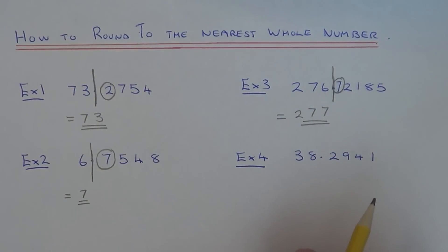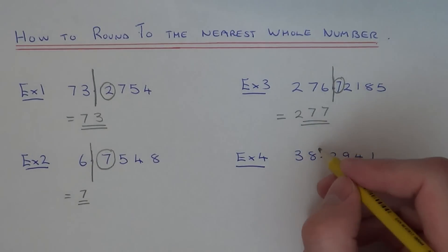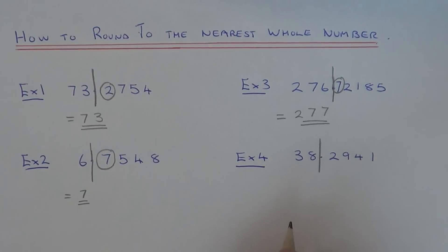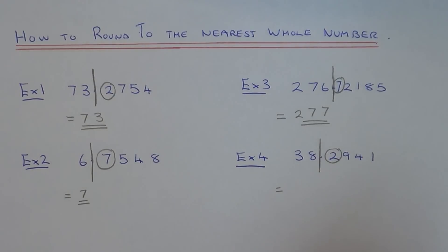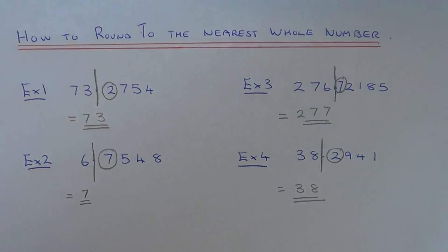So our final example is 38.2941. We need to cut the number off here, so our answer will either be 38 or 39. We just need to look at the number after the decimal point. Since that number is less than 5, this means the number is closer to 38 to the nearest whole. Thanks for watching.